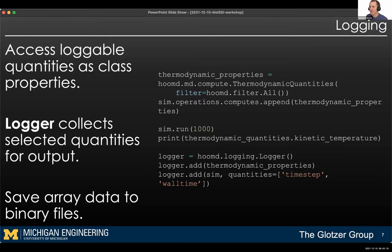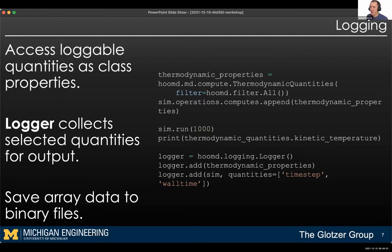We have some binary file formats you can save logged quantities to, and these are a big advantage for array data. Many simulation engines can log scalar quantities very easily, but logging something like energy per particle might not be so easy. With HOOMD v3, you can drop that into the trajectory output file. Tools like Ovito will load that in and make it available so you can color your particles by energy, or draw force vectors on top of particles — tremendously useful for post-process analysis.